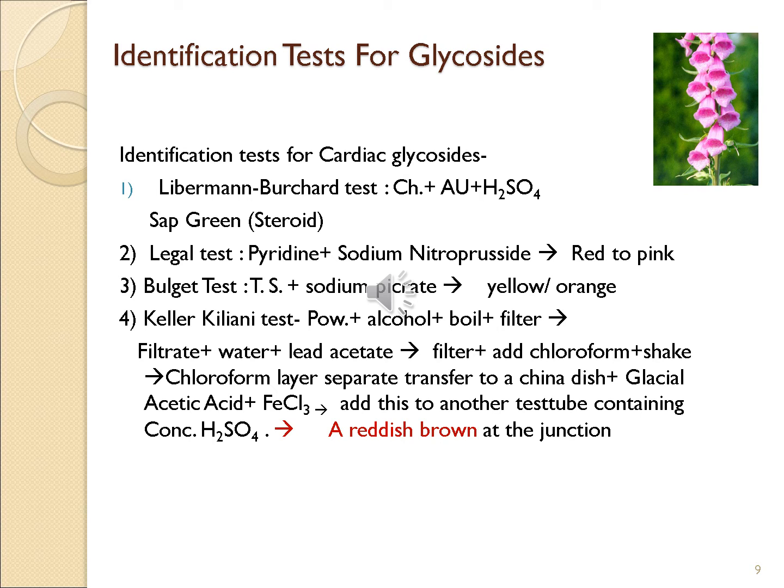The third test is the Baljet test: take a transverse section of the drug, add sodium picrate — if it shows yellow or orange color to a particular part, then that part contains glycoside. The fourth and very important test is called the Keller-Kiliani test.